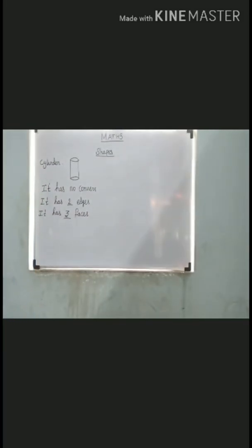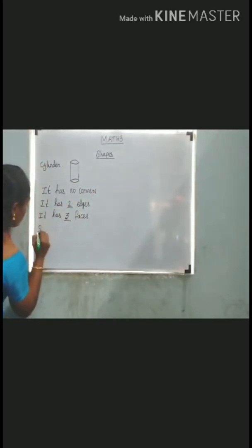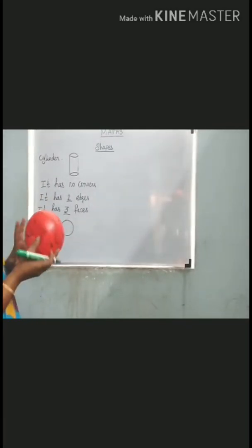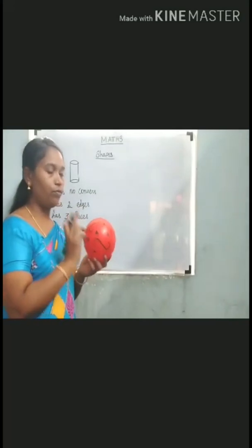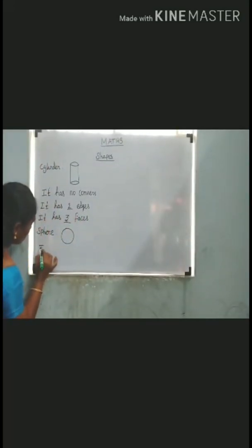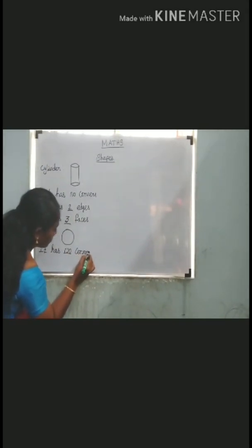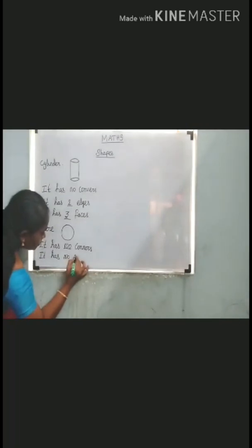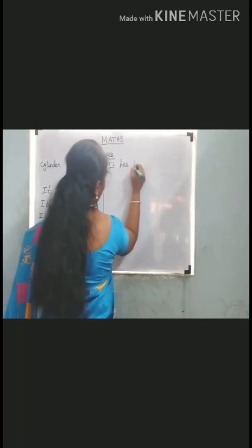Next, sphere shape — it looks like a ball. It has no corners and no edges. It has one curved face.